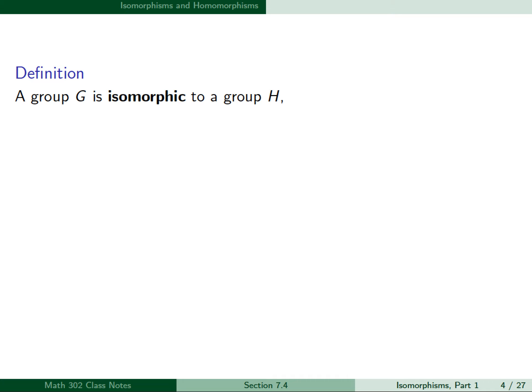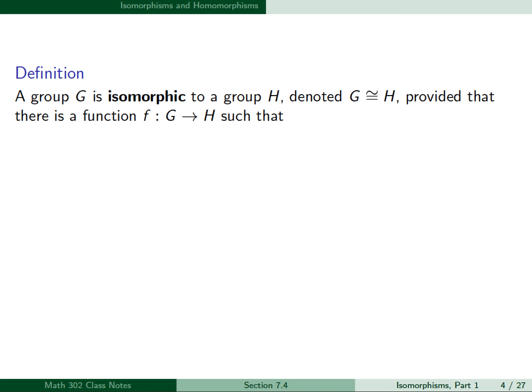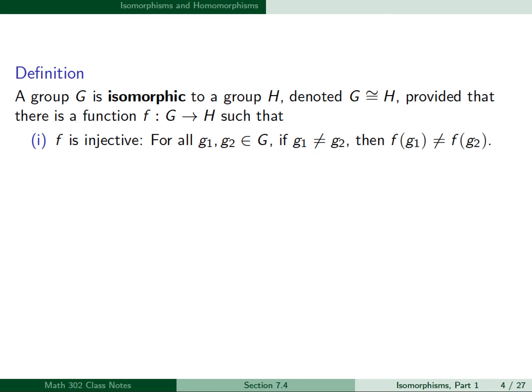A group G is isomorphic to a group H — denoted with our isomorphism symbol, an equal sign with a tilde on top — provided there is a function f from G to H such that, first, f is injective: for all g1, g2 in G, if g1 ≠ g2, then f(g1) ≠ f(g2).